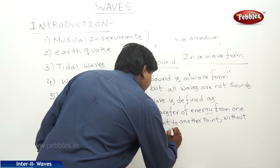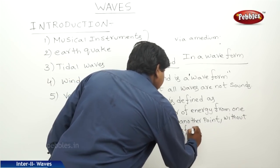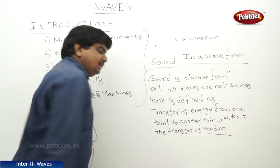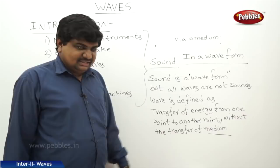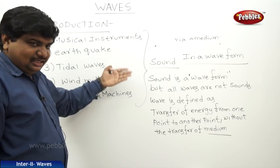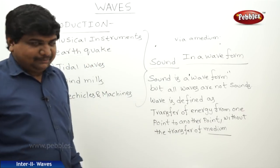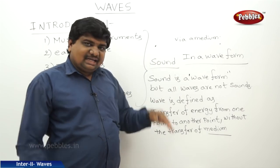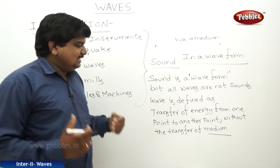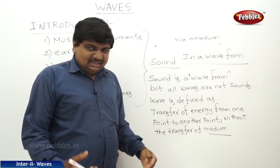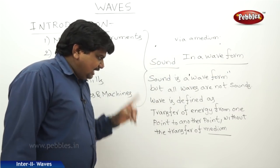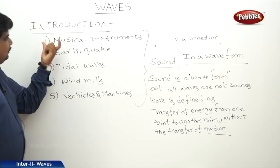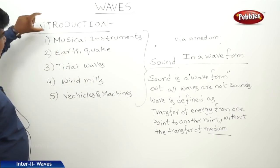The medium is classified into many types based on density, and as the lesson proceeds we will discuss all these things clearly. The medium is important to propagate the sound. A wave is defined as a disturbance, or the transport of energy from one point to another point, without any transfer of the medium.